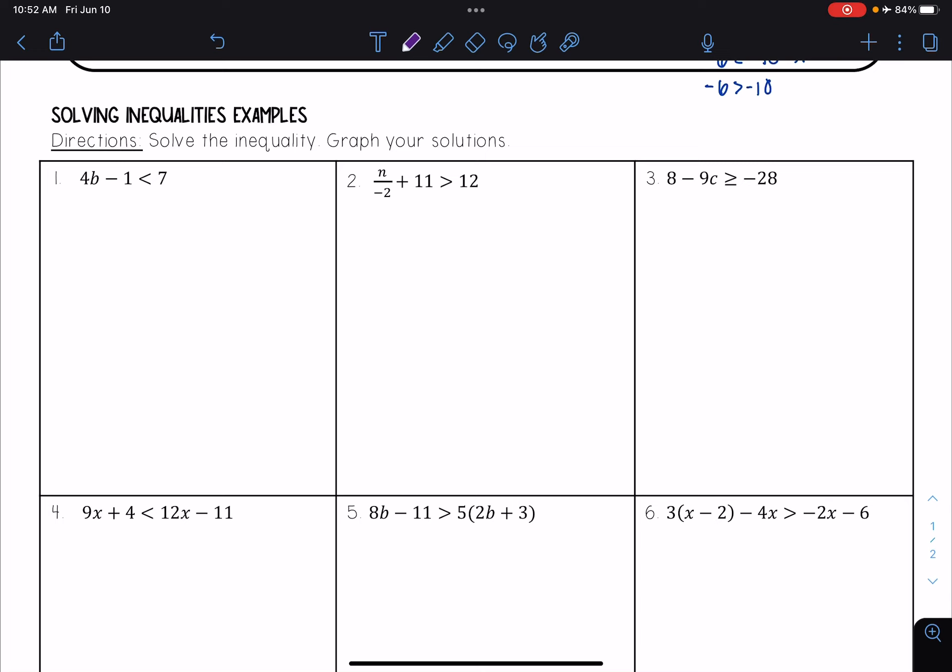So I'm going to solve this like I do for any normal equation. I'm just going to watch out for whether I'm multiplying or dividing by a negative number. So to get b by itself, I'm going to go ahead and add one to both sides. And I get 4b is less than 8. And I'm going to divide both sides by 4. And so I get b is less than 2.